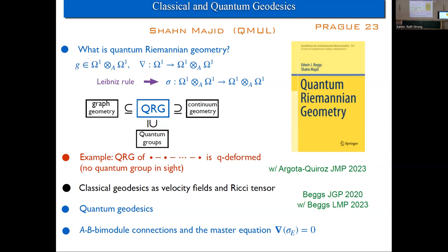My motivations — and there are many — one is that graph geometry is a special case of quantum Riemannian geometry. Another is that quantum groups have a natural role: just as Lie groups are natural examples of Riemannian manifolds, quantum groups are natural examples of quantum Riemannian geometry. And of course it contains the continuum geometry in the limit. I will show you an application to graphs — here the graph is just a chain, like a spin chain in integrable systems — and I'll show you that the intrinsic Riemannian geometry of a chain is already q-deformed without mentioning any quantum groups. That's a nice result that came out in a paper in JMP. Then I'll talk about geodesics, which really comes from Edwin Beggs's paper, followed up most recently in this paper.